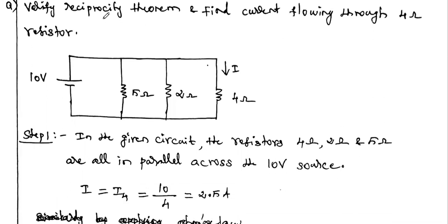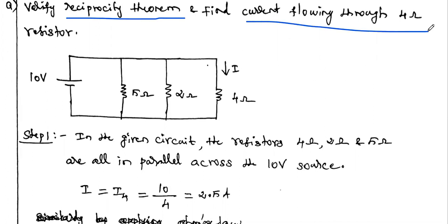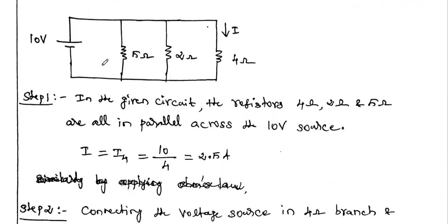So now we are moving to this video. The question is: verify the reciprocity theorem and find the current flowing through the 4 ohm resistor. So in the given diagram, which one is the input source? The 10 volt battery — this is the input source.